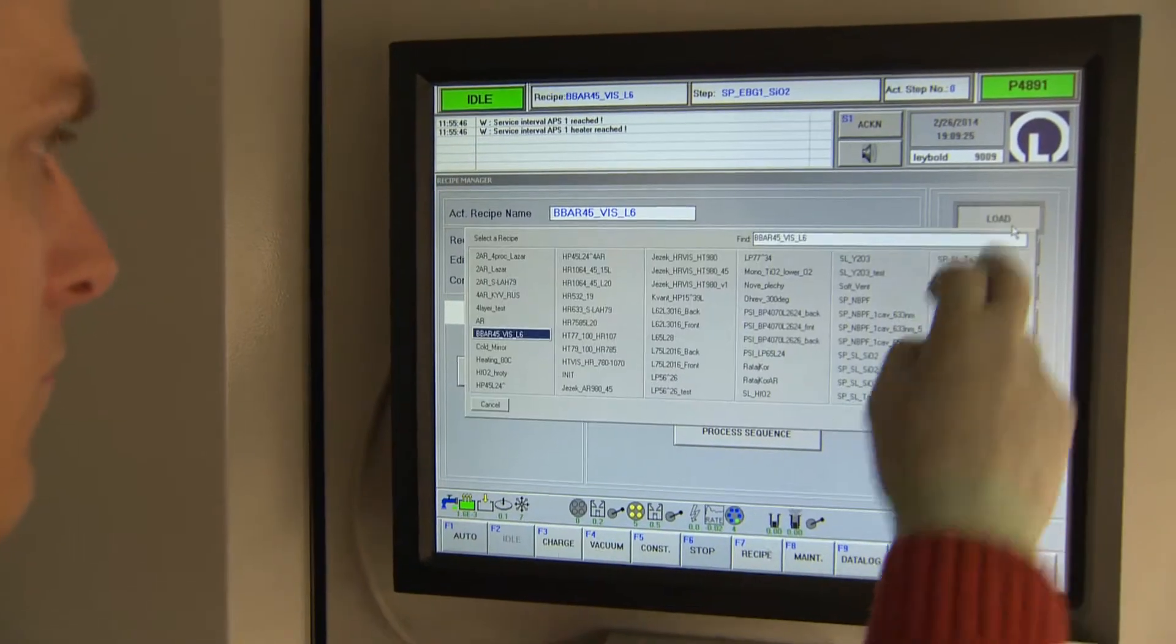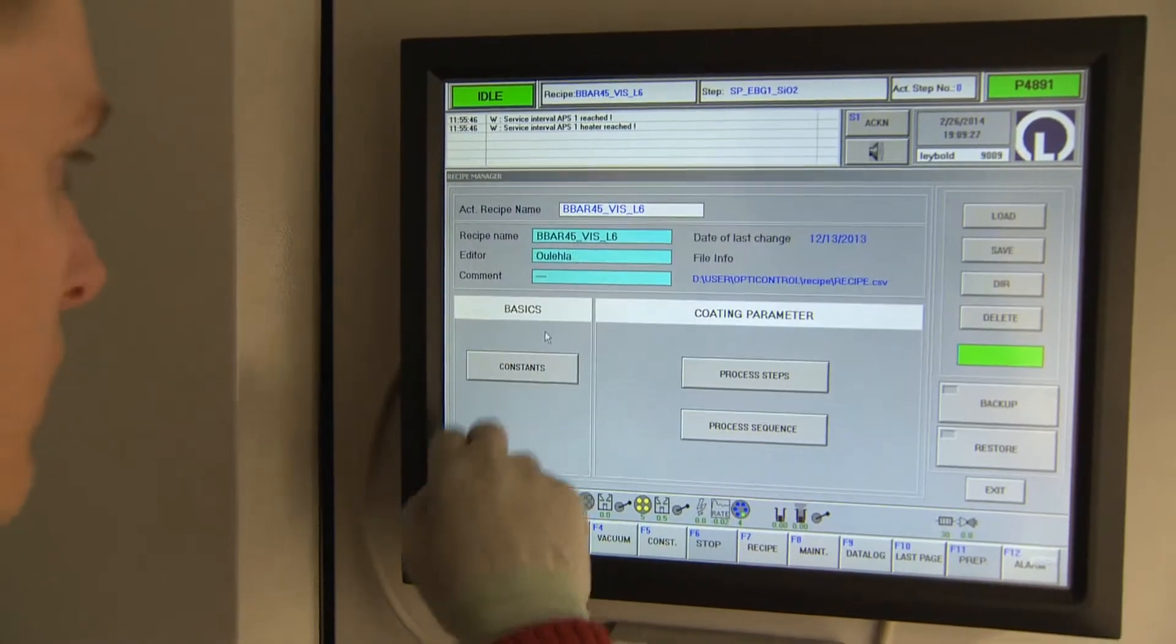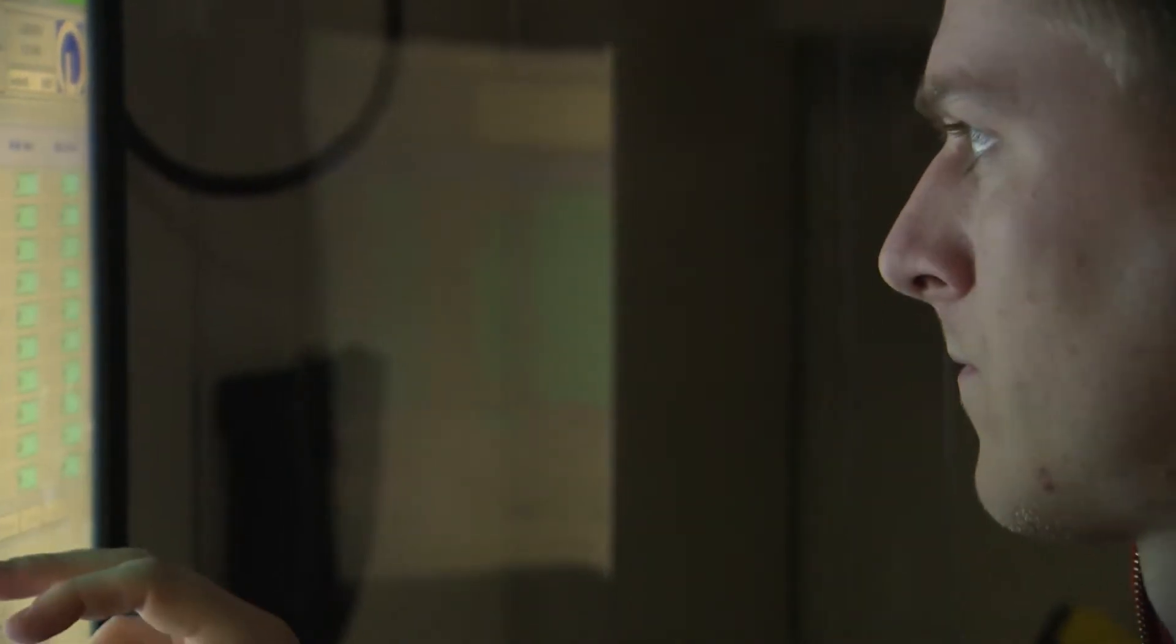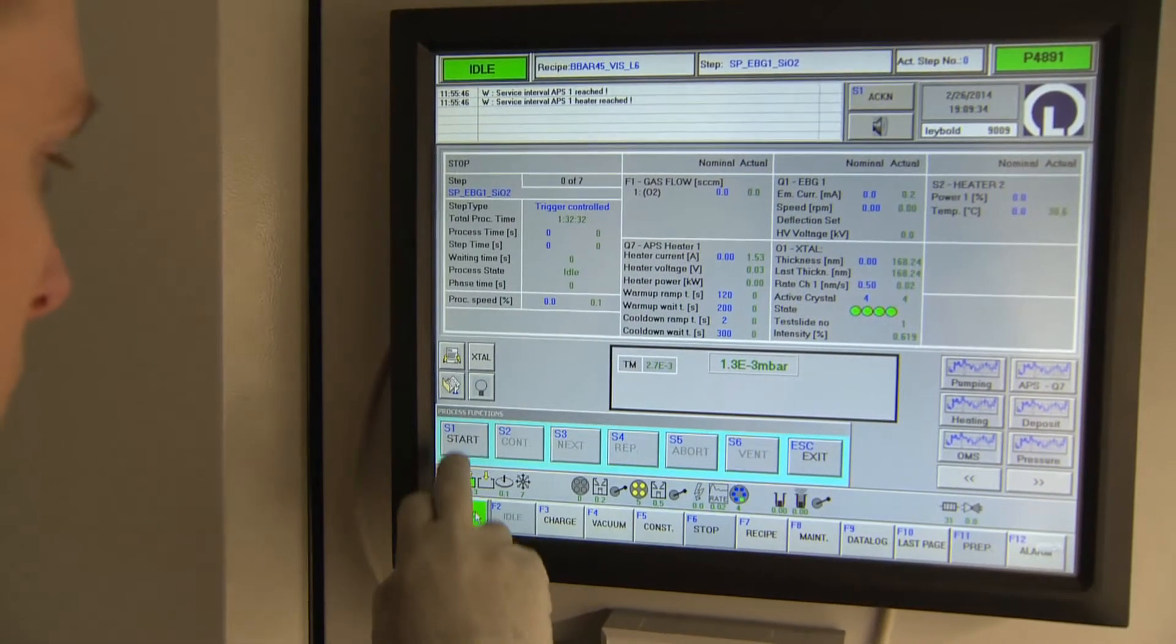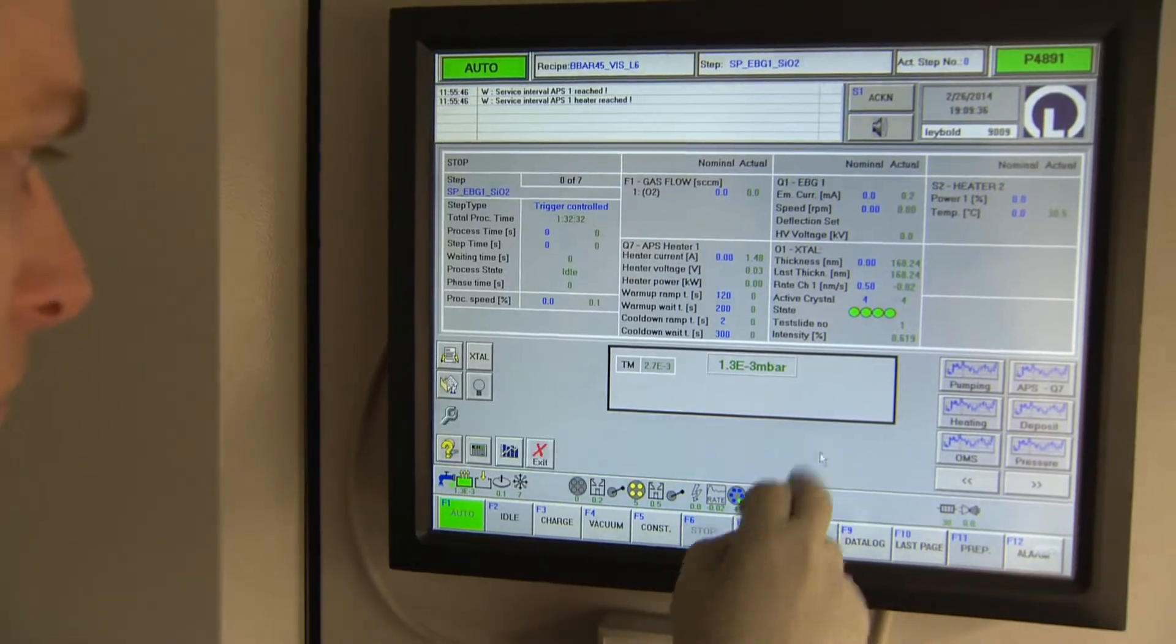As an example we could mention mirrors for different wavelengths from the UV through the visible to the infrared, anti-reflective layers reducing the natural reflectivity of glass, different beam splitters and so on.